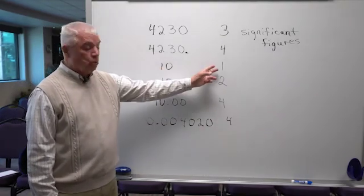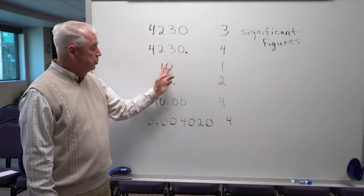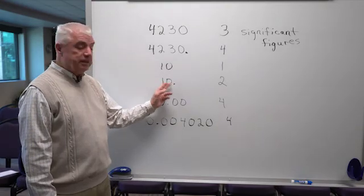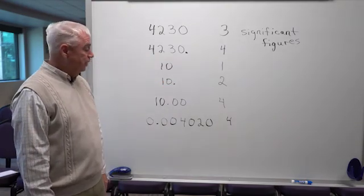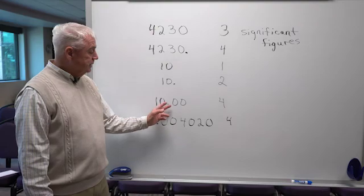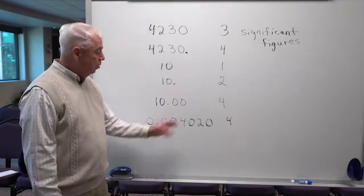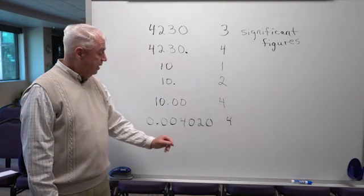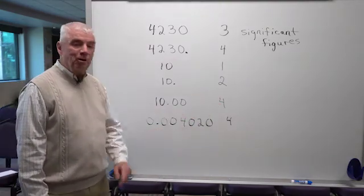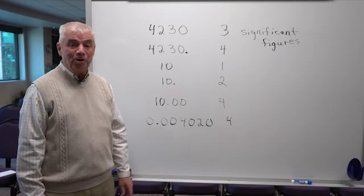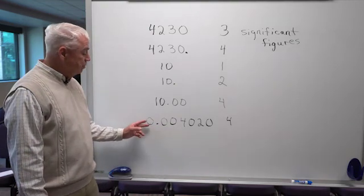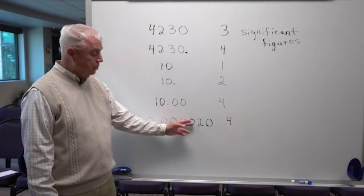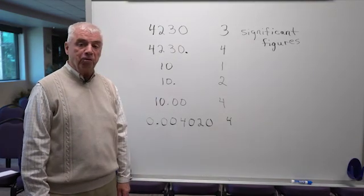Ten has one significant figure because there's no decimal present. If we wanted two significant figures, we'd need to have a decimal after the number. 10.00, well, all of these zeros now are significant. So we have a total of four. And here I've tried to summarize all the zeros that you might encounter. With a leading zero, two more leading zeros, a middle zero, and finally a trailing zero.